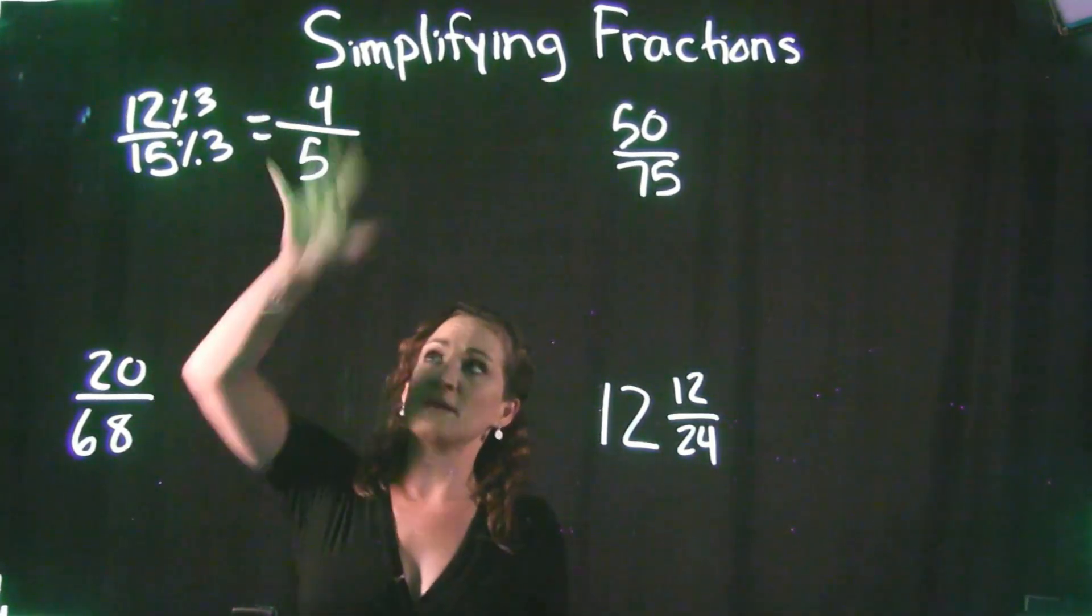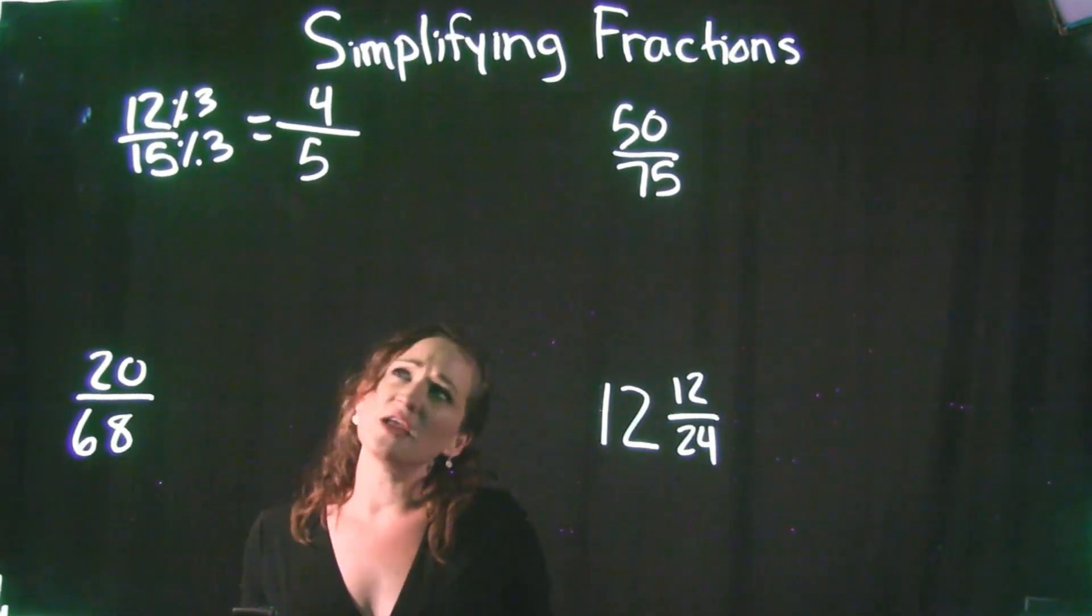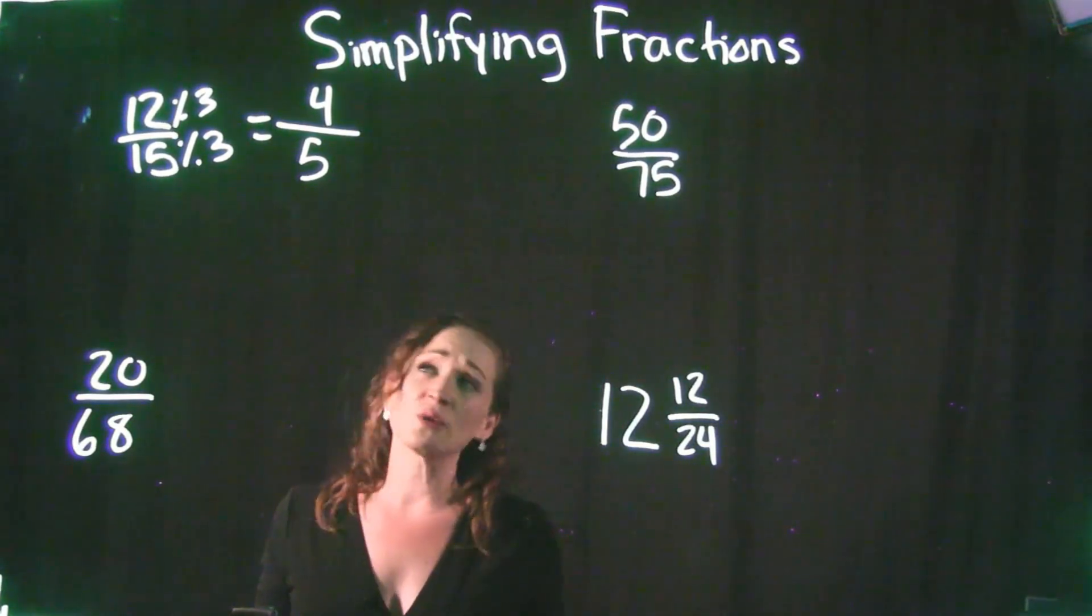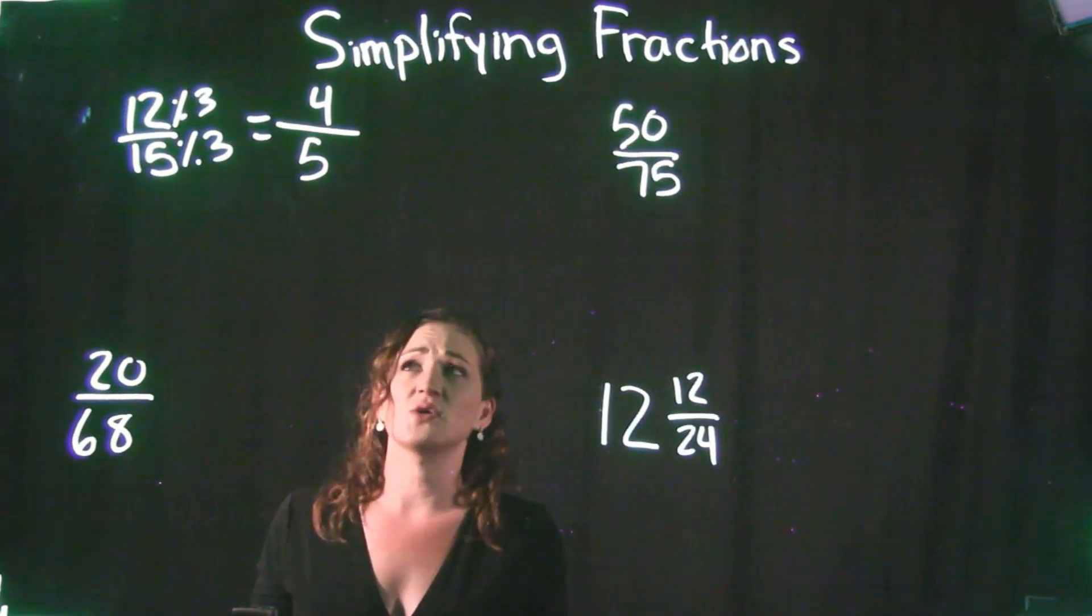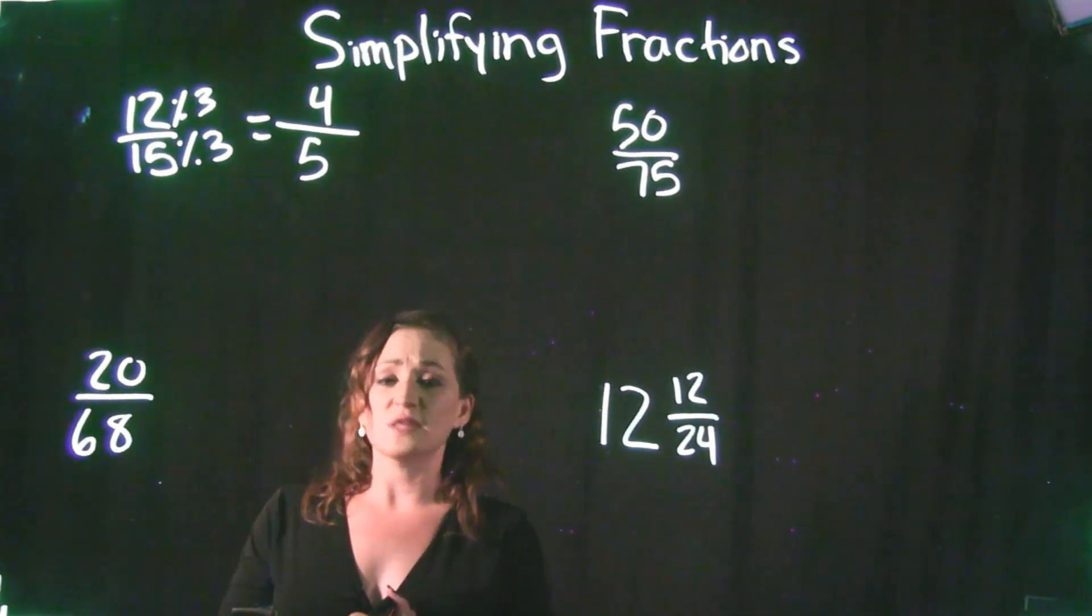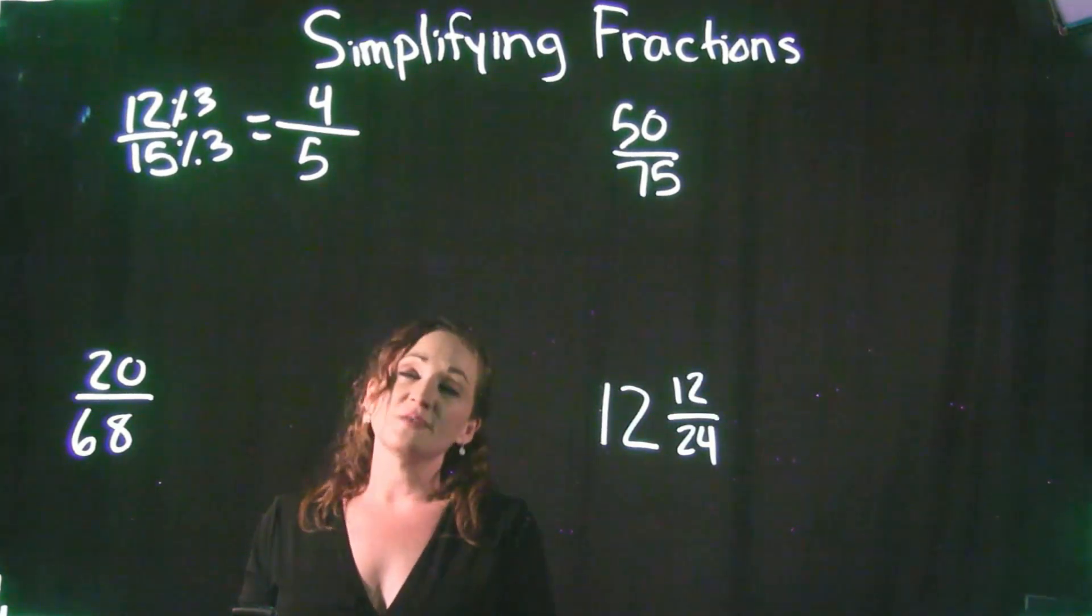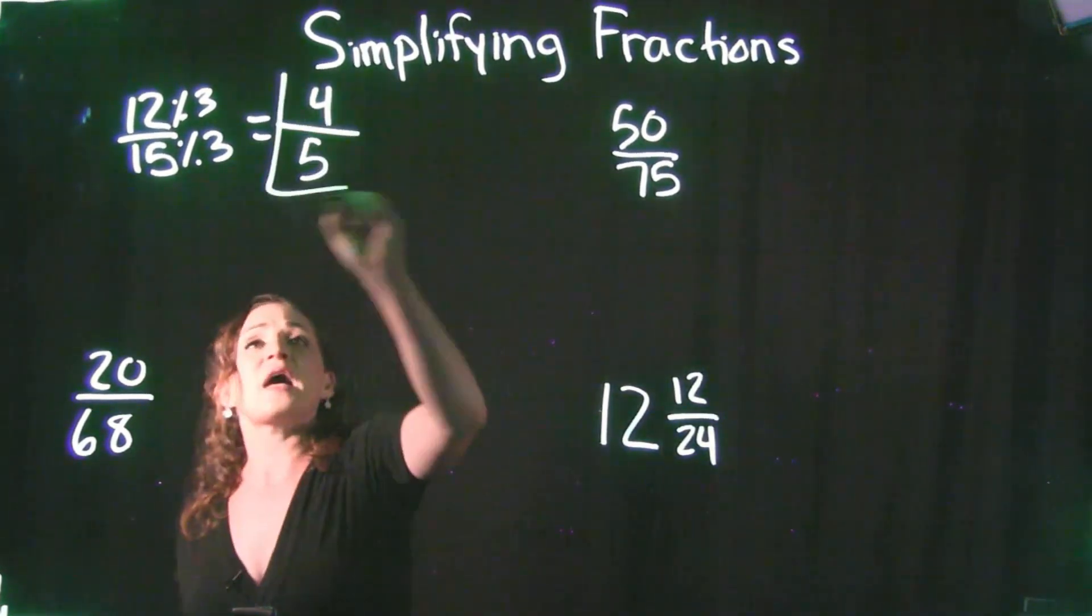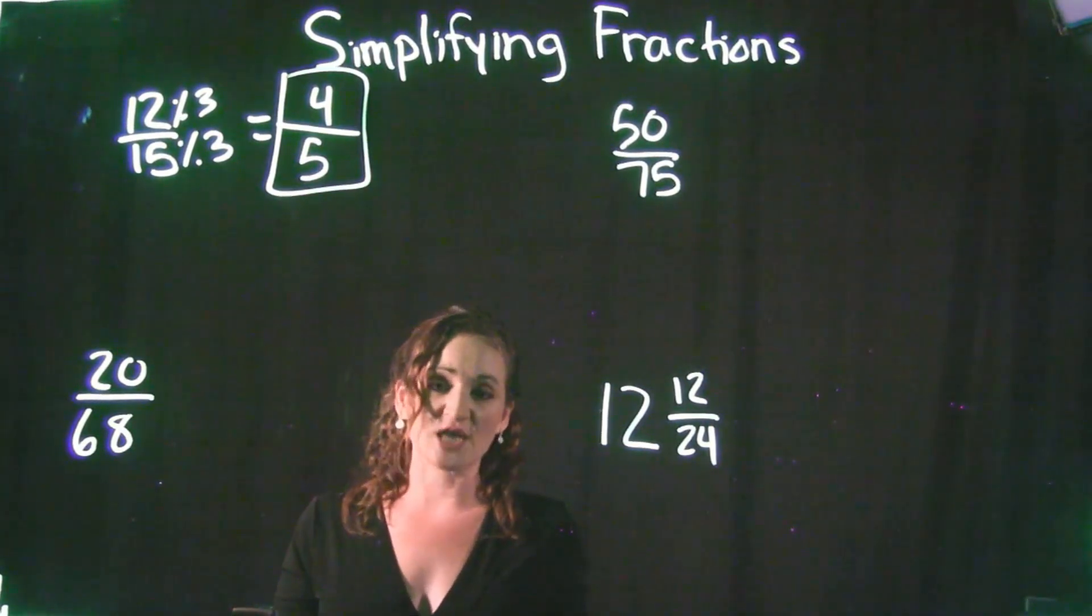So now what I want to do is look at my answer here, the 4 over 5, and think, is there anything that can divide out of a 4 that can also divide out of a 5? Well, the only thing that would work there is 1. 2 goes into 4 but doesn't go into 5. 3 doesn't go into any one of them. Same thing for 4. So actually, we are absolutely done with this problem because you can't use a 1 as a division. It does have to be a number bigger than 1. My answer is 4 fifths. This would be my simplified fraction.